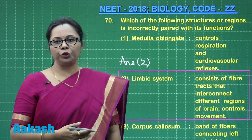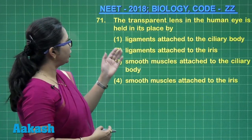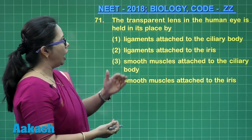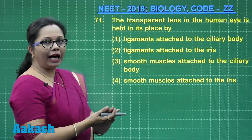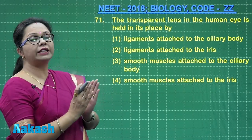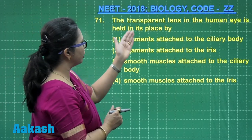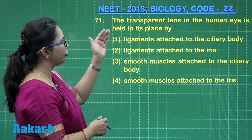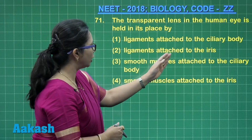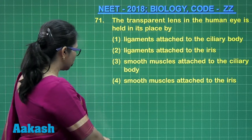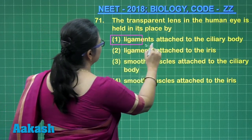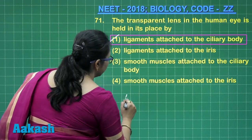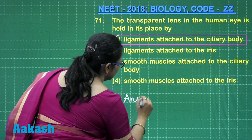Let us move ahead to question 71: the transparent lens in the human eye is held in its place by? The lens is attached to the ciliary body by suspensory ligaments. Looking at the choices, option 1 states ligaments attach to the ciliary body — that would be our correct answer. It is not attached to the iris or to the smooth muscles, so the correct answer is option 1.